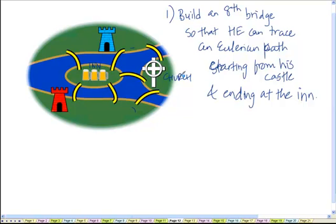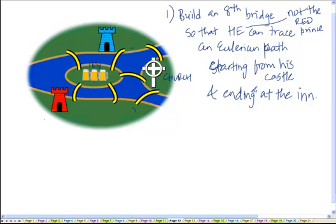He wants to start in the morning, tour the whole city, and in the evening land up at the inn where he can brag about his victory. But he wants the red prince to be unable to replicate this feat — he does not want the red prince to trace an Eulerian path from where he is. The question is: where should he add the eighth bridge?